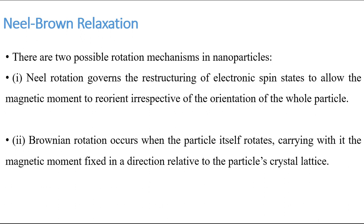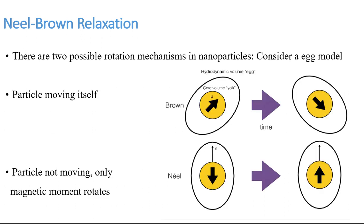There are two possible rotation mechanisms in nanoparticles. In Néel rotation, there is a restructuring of the electronic spin states allowing the magnetic moment to reorient irrespective of the orientation of the whole particle — the particle itself does not physically move, only the huge core spin rotates toward the anisotropy axis. In Brownian rotation, the particle itself physically rotates, carrying with it the magnetic moment fixed relative to the particle's crystal axis.